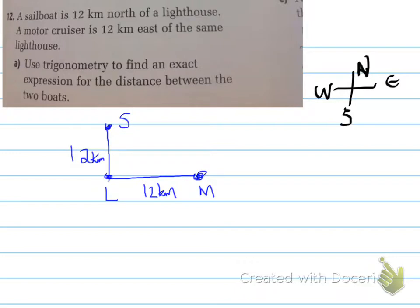So notice that they're both 12 kilometers, and one's going north, the other one's east, so we make a right-angled triangle such that we need to find the distance between the sailboat and the motor cruiser. So by doing so, because we need to use trigonometry, we need to have an angle. In order to find that angle, you realize that it's an isosceles triangle, so each of those angles must be 45 degrees.